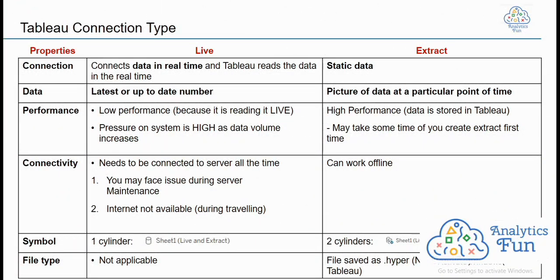This is the difference between live versus extract, from the connecting to preparing data module. In a live connection, as the name suggests, it connects data in real time and Tableau reads the data in real time, so it always reflects the latest, up-to-date numbers. An extract connection is static data — a snapshot of data at a particular point in time. It is a copy of data, and if the original data changes, the extract data does not change.